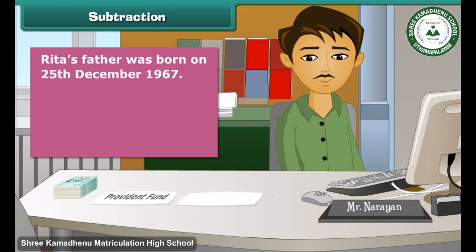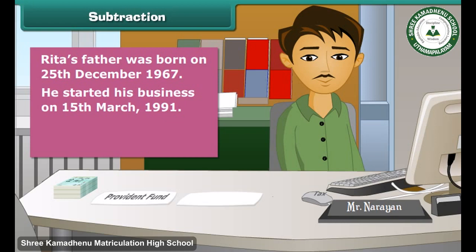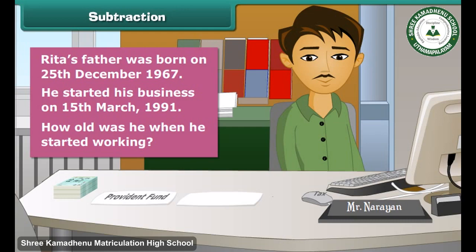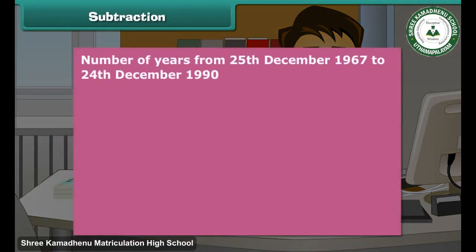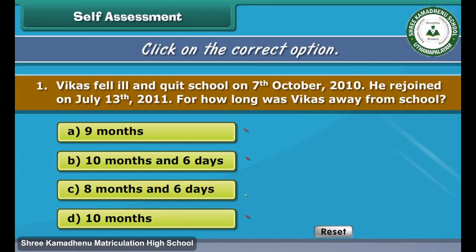Ria's father was born on 25th December 1967 and started his business on 15th March 1991. How old was he when he started working? Number of years from 25th December 1967 to 24th December 1990 is 1990 minus 1967, which equals 23 years. Kids, it's time to assess what you have learnt. Read the questions carefully and click on the correct option.